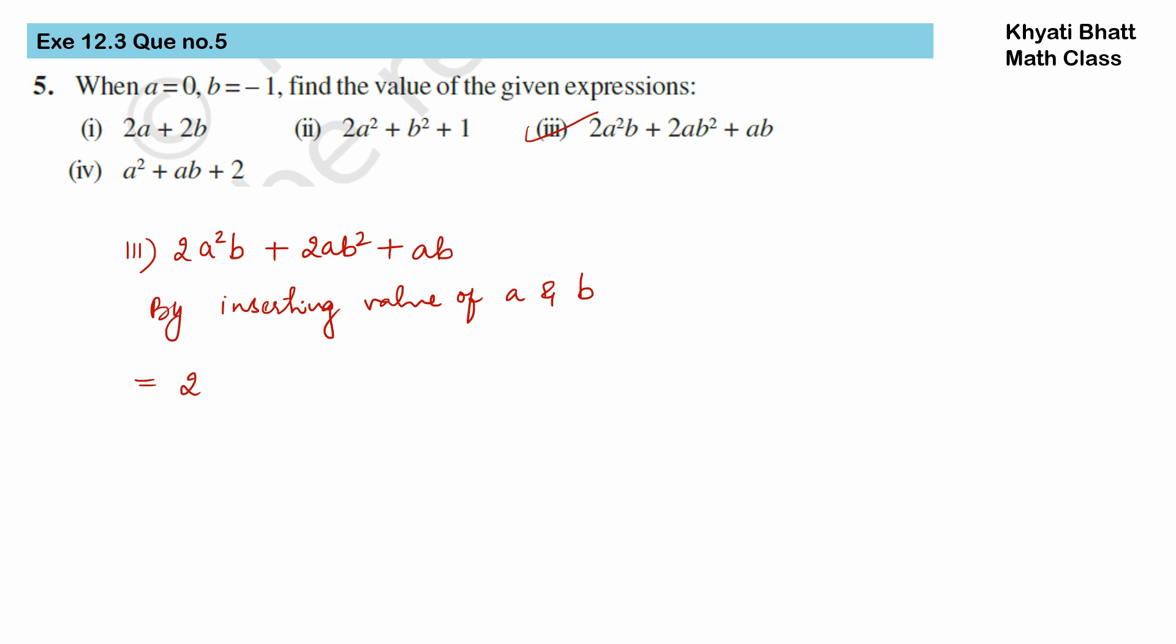Now a² is there. Since a is 0, it will remain 0. Then b, so b is minus 1 into minus 1, plus 2ab². So at the place of a, I am putting 0, and for b², I am putting minus 1 and then square, plus ab is there. So both values will be in multiplication like this.